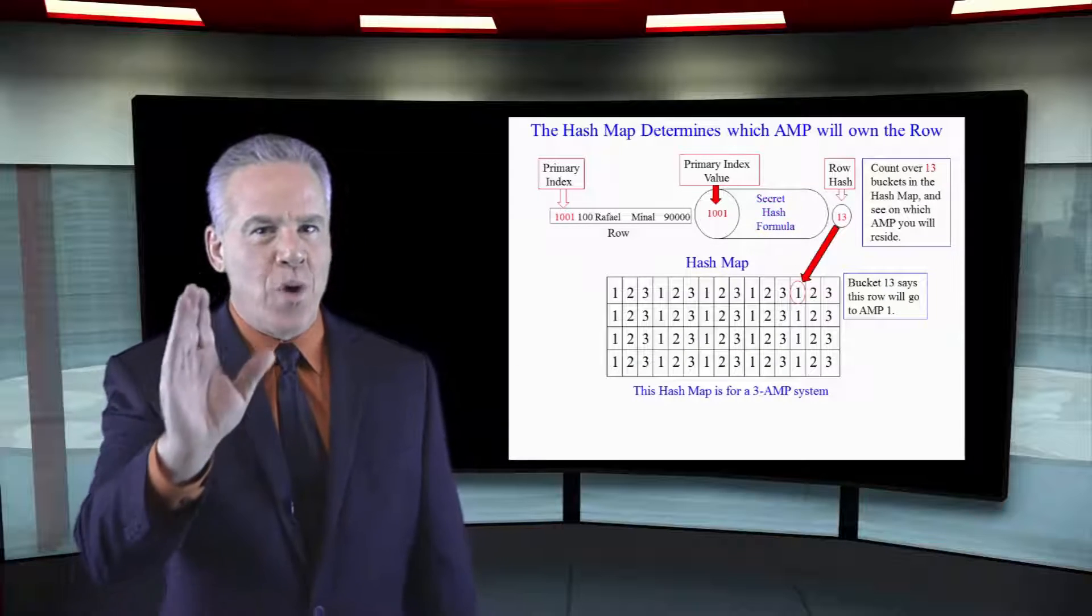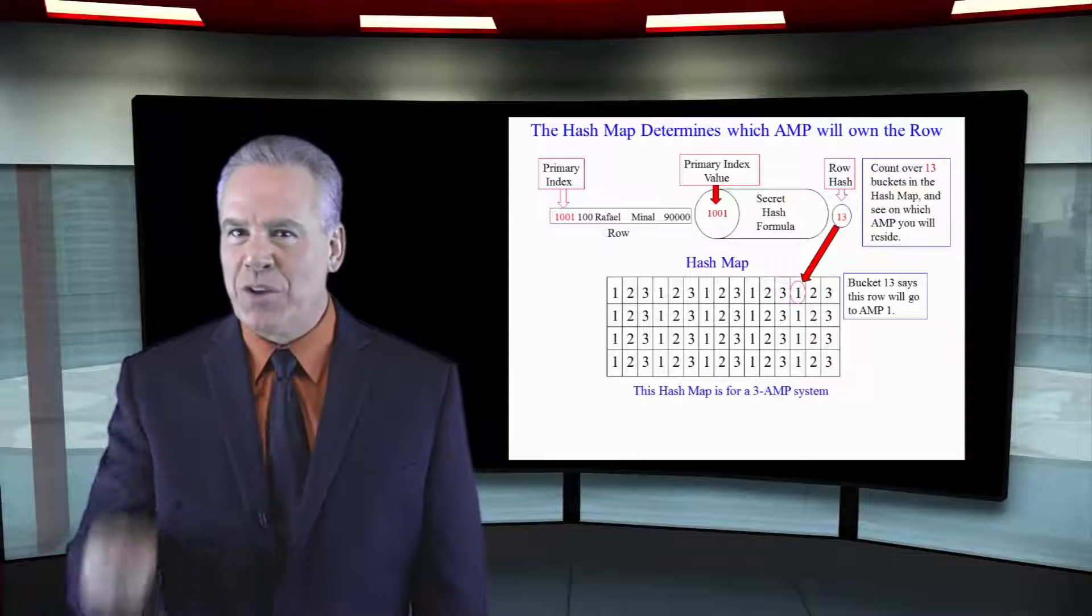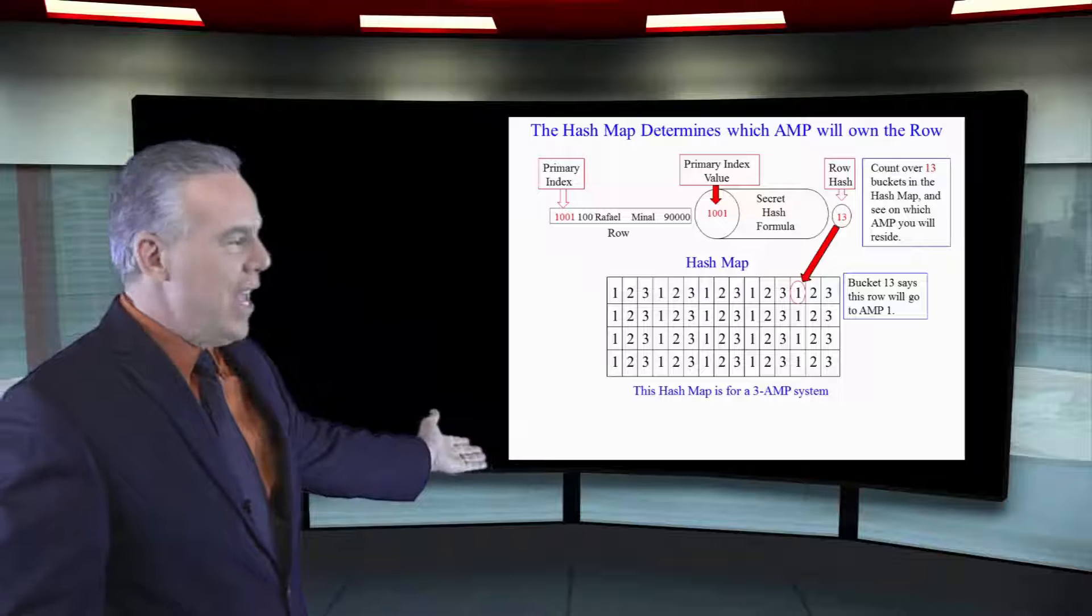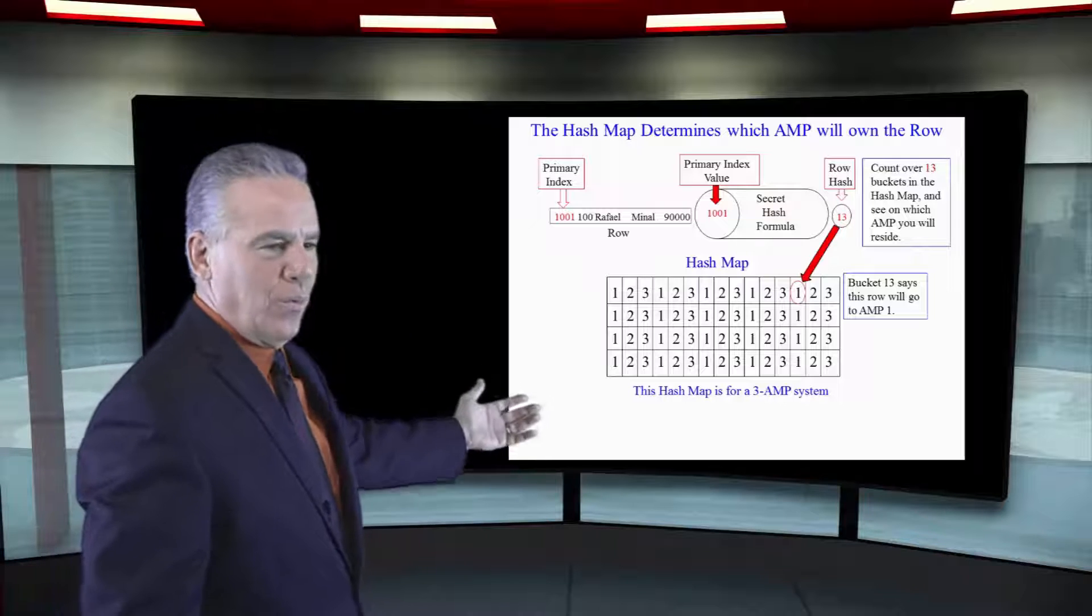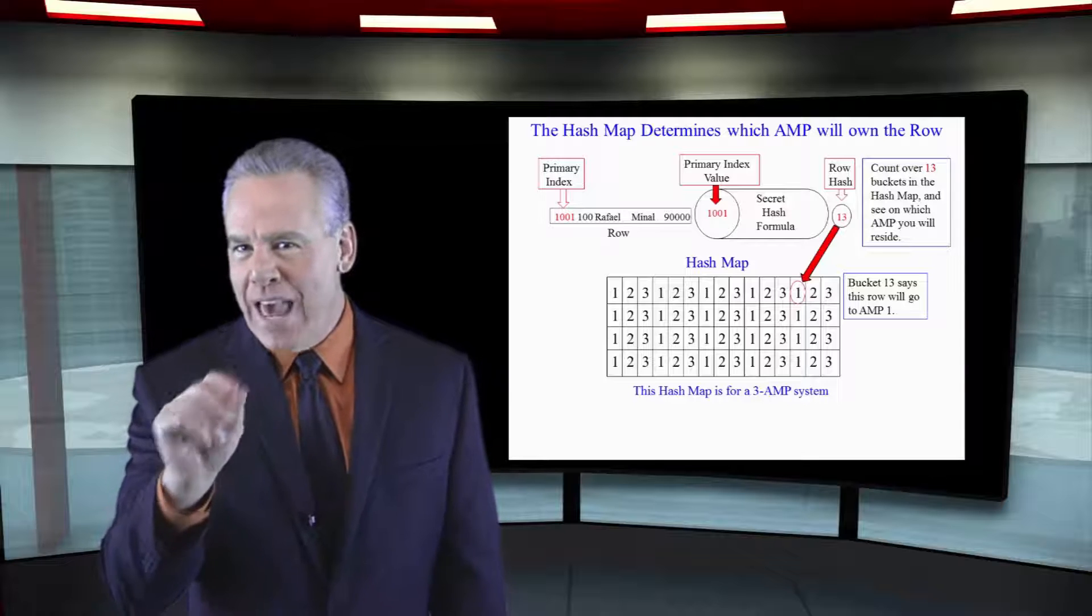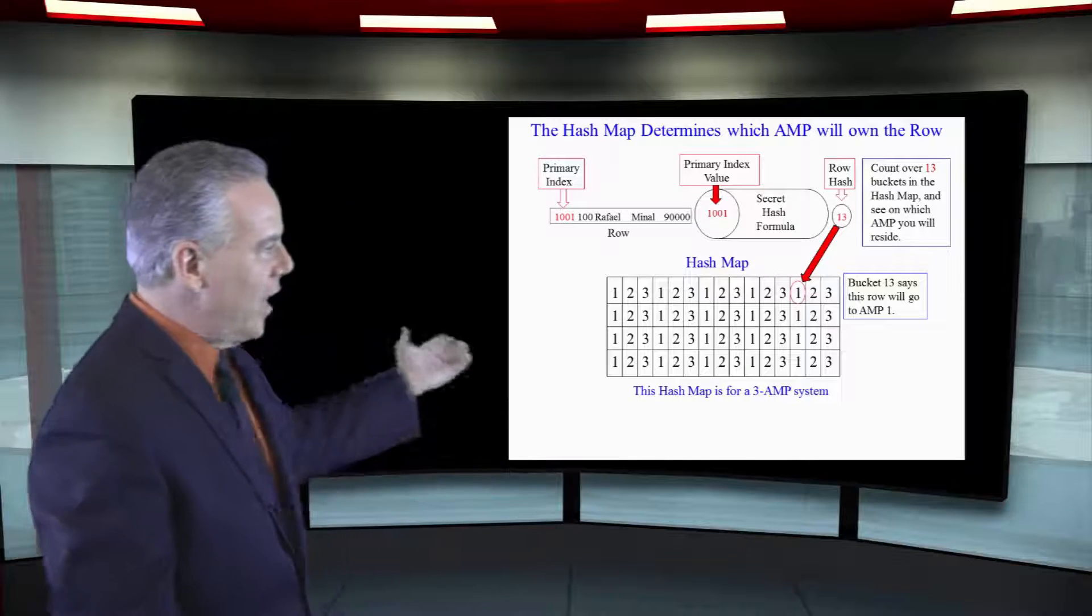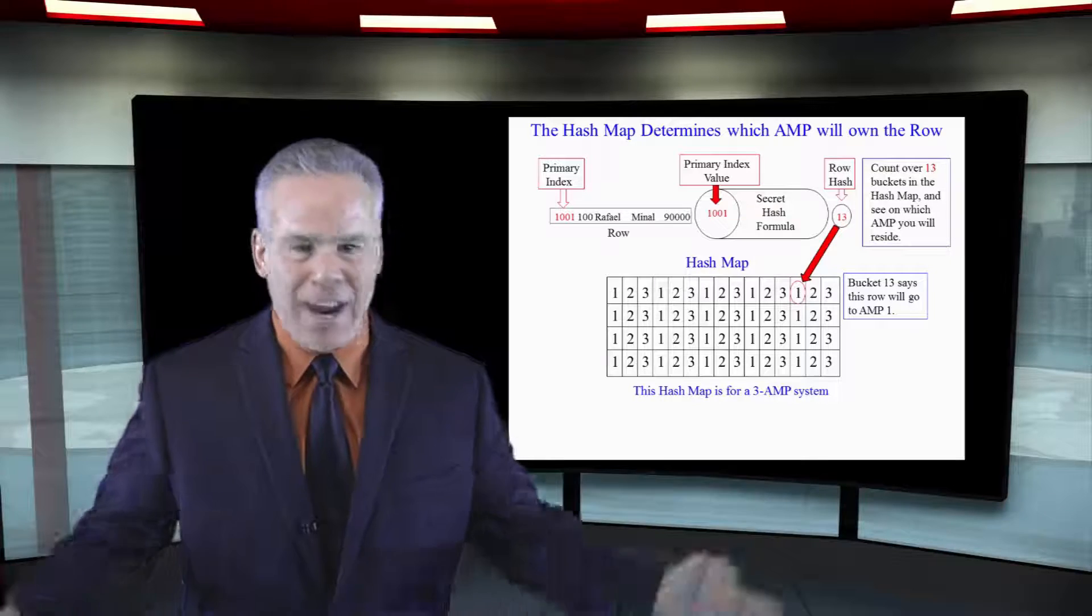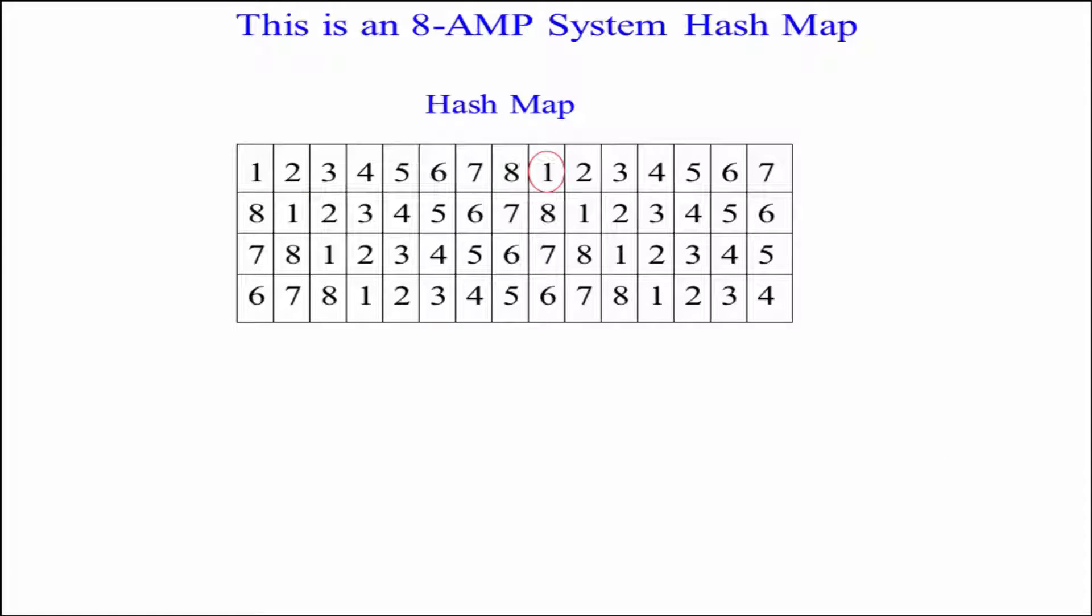We know there's only one hash formula, so it's going to be real consistent. Take a look down here. That's the hash map. It says 1, 2, 3, 1, 2, 3, 1, 2, 3. There's a million buckets in there. You don't need to know that, but just know that inside the 1, 2, 3, 1, 2, 3 are the amp numbers. If there were 8 amps in the system, it'd say 1, 2, 3, 4, 5, 6, 7, 8, and it'd fill up all million buckets.